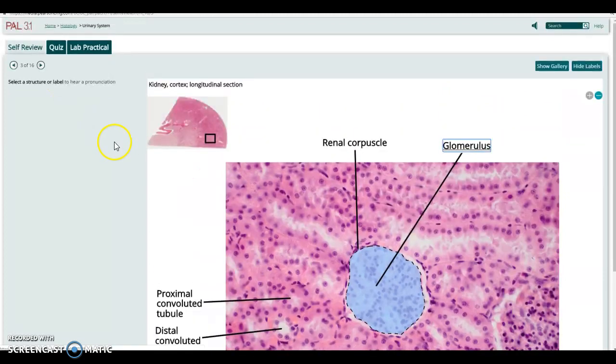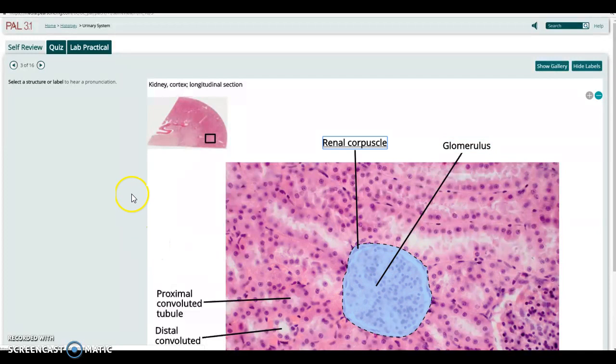There's a glomerulus right there up close. Nice. So that's, of course, where the blood filters out of the capillaries into the tubes of the kidney, and you can see that really nicely.